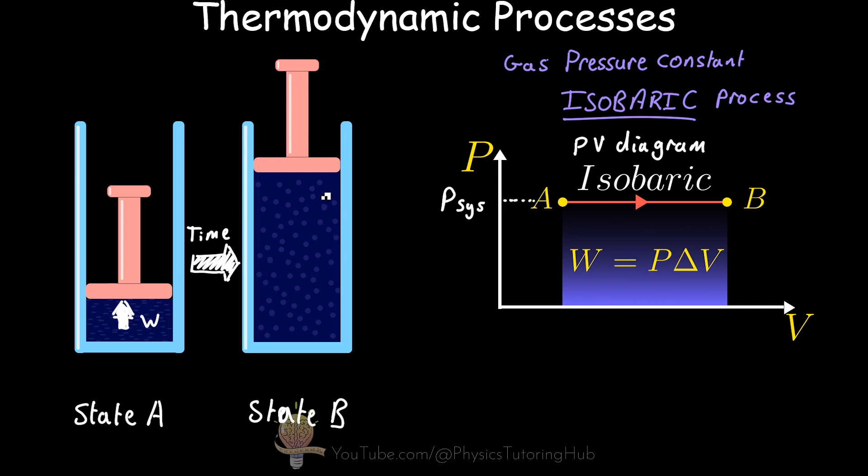But this isobaric process can also move from state B to state A. In other words, where our piston here has a larger volume and it compresses to a smaller volume. So what does this mean in terms of work? How much work is our gas doing now on the piston? Well, the area under the graph hasn't changed, but the change in volume is now negative because the final volume is now smaller than the initial volume. And you'll also notice here that the arrow on our curve up here has flipped. It's pointing to state A now.